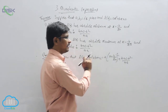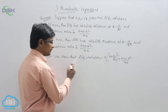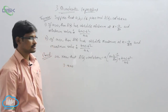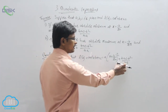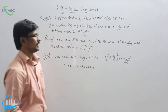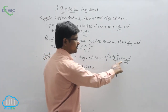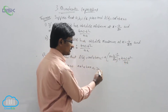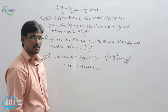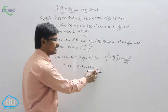Now two cases will exist: one is a > 0, and the other is a < 0. In the first case, if a > 0, then a(x + b/2a)² is greater than or equal to 0, so ax² + bx + c will be greater than or equal to (4ac - b²)/4a.